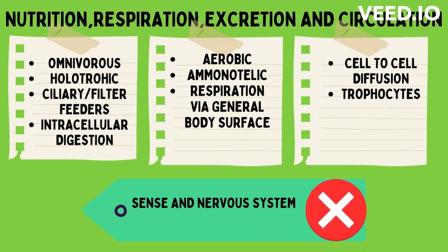Nutrition: sponges are omnivorous and holozoic in their nutrition. They chiefly feed on plankton and are called ciliary or filter feeders, showing intracellular digestion. They are aerobic and autotrophic organisms. Respiration and excretion occur through their general body surface. Food is distributed either by cell-to-cell diffusion or by special amoebocytes called trophocytes.